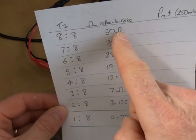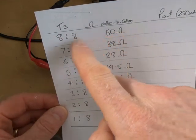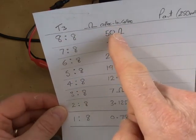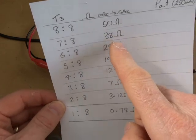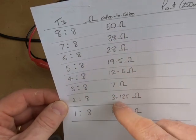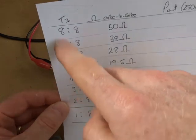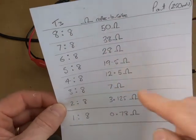In terms of what's being presented to the collector-to-collector, 8:8 will be 50 ohms, 7:8 will be 38 ohms, and then down we go progressively smaller in terms of the resistance that's being presented to the collector-to-collector.